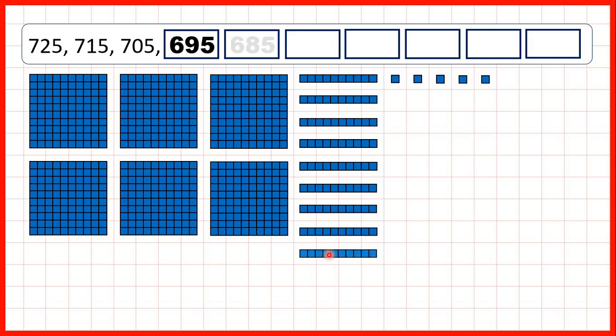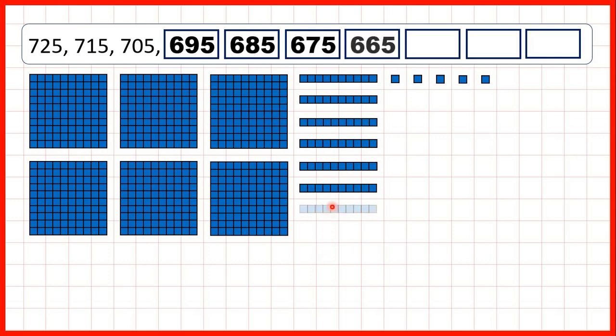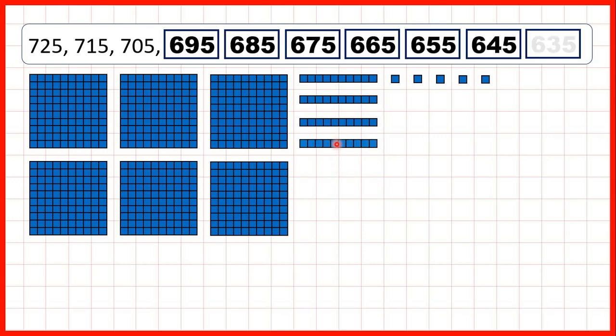So then we can continue counting back in tens, taking away one tens block each time, until we get to 635.